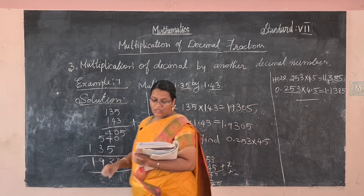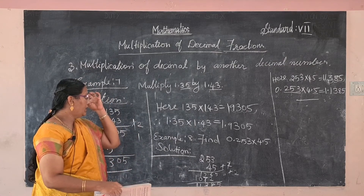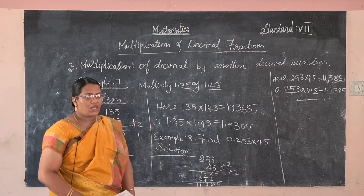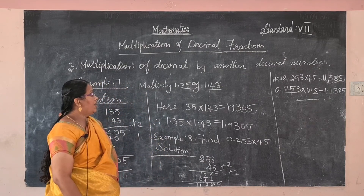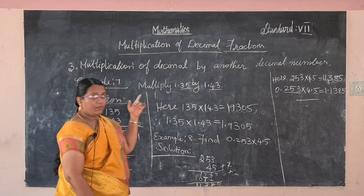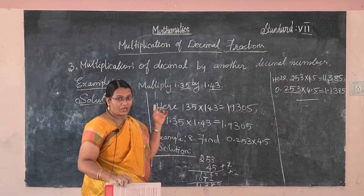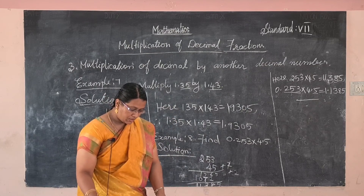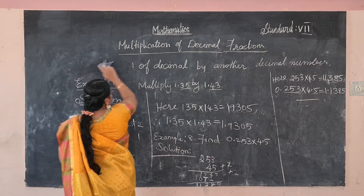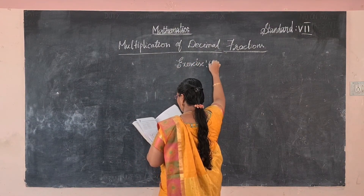I hope you all understood today's concept. Today we learned multiplication of decimal fractions: first, multiplication of decimal by ten, hundred, or thousand; second, multiplication of decimal by a whole number; third, multiplication of decimal by another decimal number. Now see the exercise problems — Exercise 4.1.